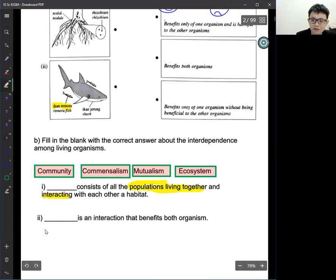So the answer will be community, very good. So community, I just put the arrow here. And number two is an interaction that both benefit. What is the answer, Megan? Mutualism. Very good.